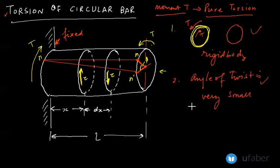We have already assumed that the left end of the bar is fixed and the right hand end will rotate through a small angle. Let us say Phi—this is the angle through which the right hand end is rotating upon application of the torque T.